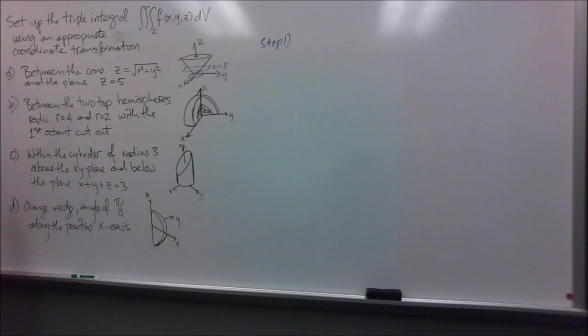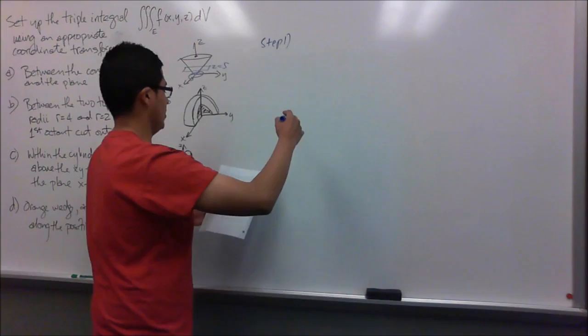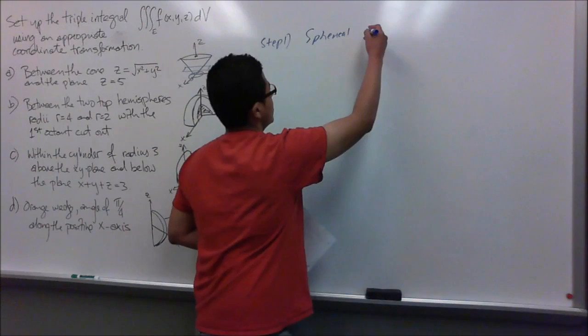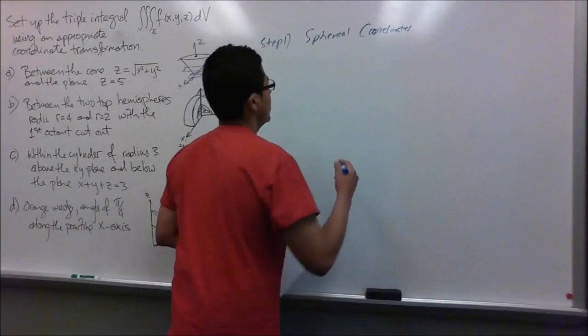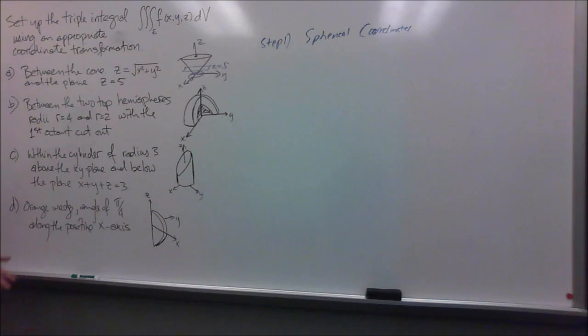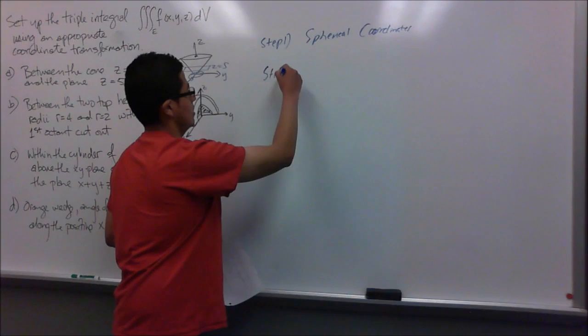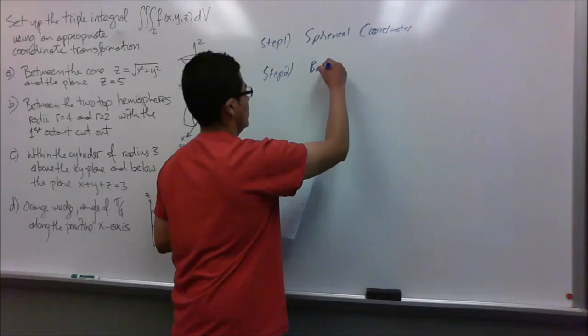In this problem I will be setting up the triple integral between the two top hemispheres of radius 4 and radius 2, with the first octant cut out. The method I will use is spherical coordinates, because a hemisphere is just half of a sphere, so it will make the transition a lot smoother. In step two I will set out the limits and boundaries.